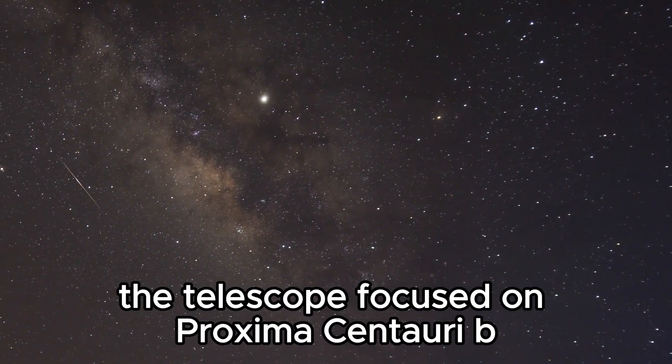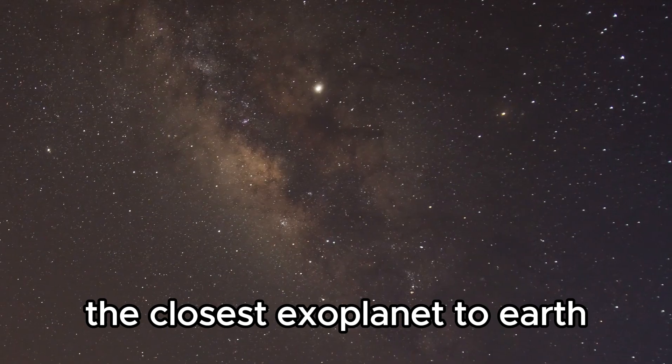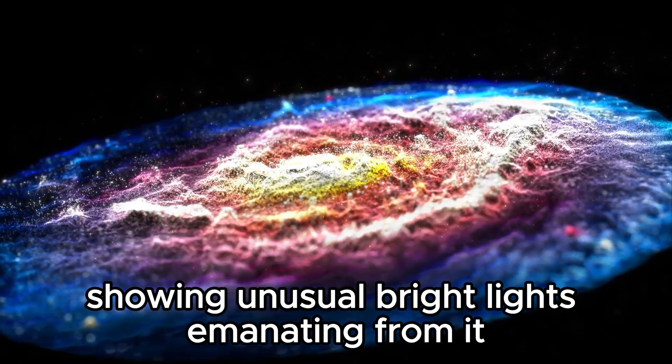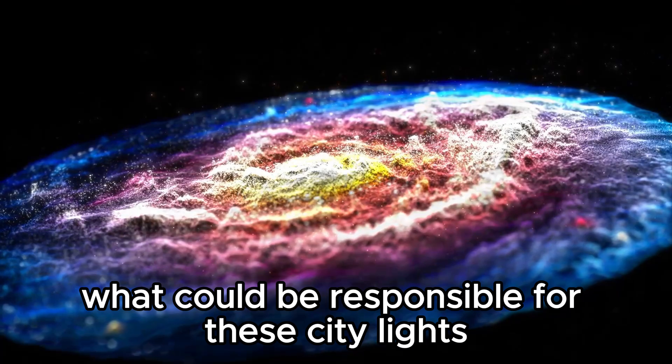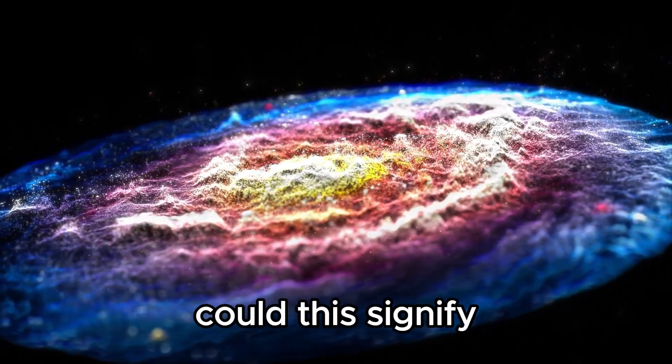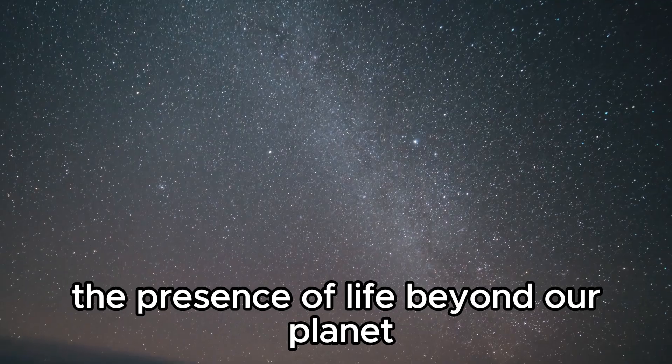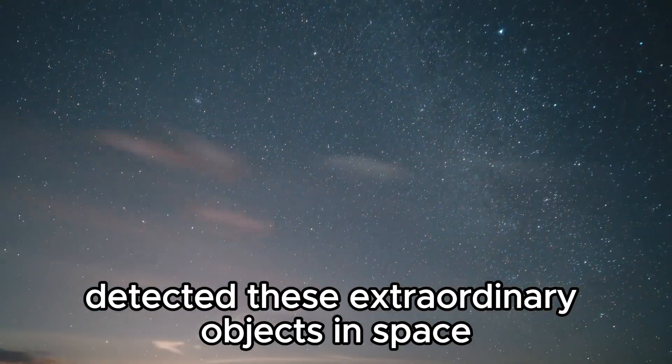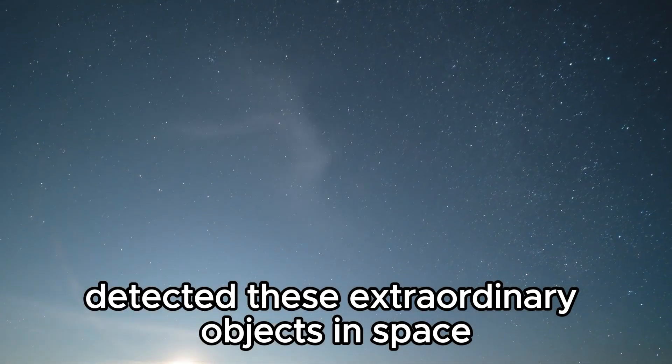The telescope focused on Proxima Centauri B, the closest exoplanet to Earth, showing unusual bright lights emanating from it. What could be responsible for these city lights? Come with us as we delve into how the James Webb Telescope detected these extraordinary objects in space.